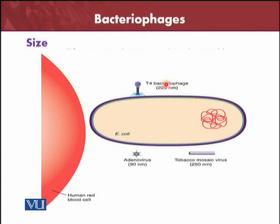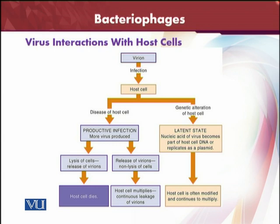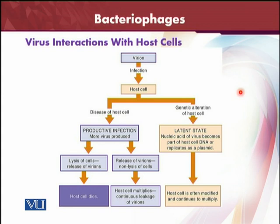You can compare the size of viruses relative to bacteria, and then the T4 bacteriophage which causes disease in bacteria, and this is the human red blood cell. Regarding virus interaction with the host cell — the bacteriophage and its interaction — after it enters the host cell there are two possibilities: either there is a genetic alteration of the host cell, or the virus takes over the machinery and causes disease. In the latent stage, the nucleic acid of the virus becomes part of the host cell DNA and replicates as a plasmid. The virus does not cause disease at this moment; the host cell continues to multiply and considers the virus part of its own life cycle.